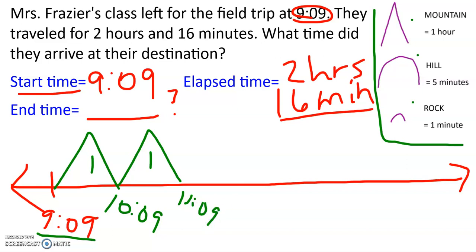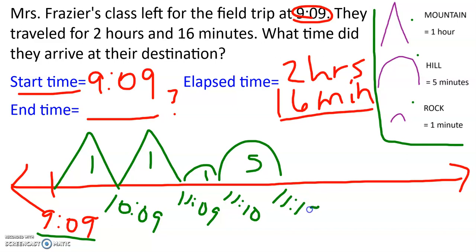I don't need any more hours, so now I'm going to go for my minutes — I need 16 minutes. Since I'm at 11:09, I'm going to add one minute to get to 11:10, because 11:10 is an easy number to add fives to. I'll add a hill of five minutes, putting me at 11:15. So far I've added six minutes and I need 16, which means I need 10 more minutes. I'm going to do a hill of 10, so 11:15 plus 10 minutes puts me at 11:25.